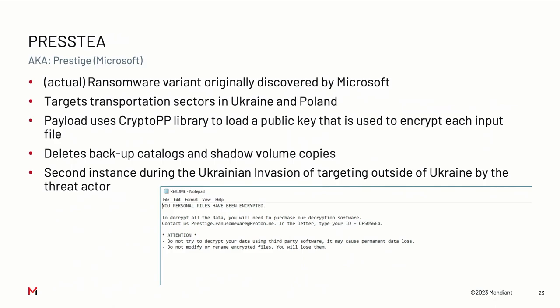Moving on to Prestige malware - this was actual ransomware. They actually wrote ransomware this time, not a really bad version. Microsoft originally found this targeting the transport sector in Poland and Ukraine. It was written as proper ransomware using CryptoPP to load a public key and encrypt all files, and deletes shadow copies. But under the hood they used Impacket to distribute it. Microsoft attributed it to the GRU - to a group they call Iridium or Sandworm. This is the second instance of the GRU targeting outside Ukraine - though this one probably made more sense than accidentally wiping stuff. They targeted specific people and did not want this linked back to them.